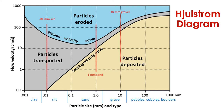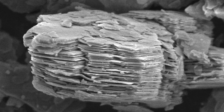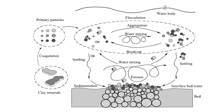Before we move on, you may be wondering why the left side of the Hjulstrom diagram looks unusual. Why does it take a very high velocity flow to erode and move clay-sized particles at rest? The answer is not intuitive. The reason is because clay-sized particles consist of clay minerals, and clay minerals are very cohesive, making it very difficult for a flow to separate them and put them in motion. Clay minerals stick together when they are deposited, so it takes a higher velocity flow to move them again than you would expect.